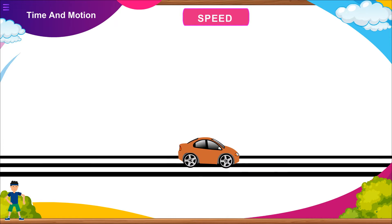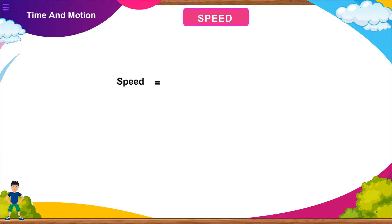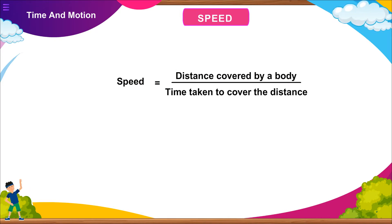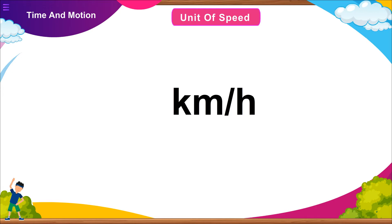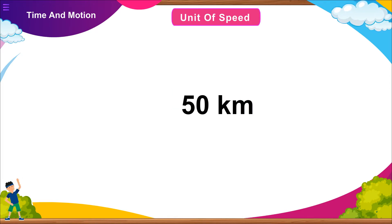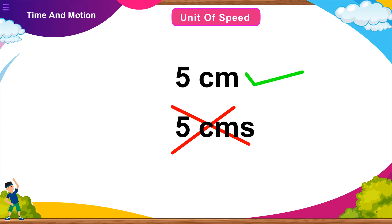Speed: The speed of an object is defined as the distance covered by a body in a unit time. Speed equals distance covered by a body divided by time taken to cover the distance. Unit of speed: Unit of speed is meter per second. It could also be expressed in other units like meter per minute or kilometer per hour. While writing units, care should be taken that the symbols of all units are written in singular. For example, we write 50 kilometer and not 50 kilometers or 5 centimeter, not 5 centimeters.